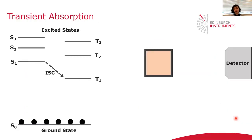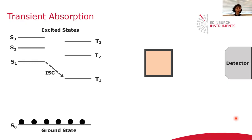For probing the non-radiative relaxation of the excited states, you would use transient absorption. Transient absorption is a little different — in this experiment it uses two sources of light, a pump and a probe, to excite the sample. Let's look in detail at what happens in one of these pump-and-probe experiments.